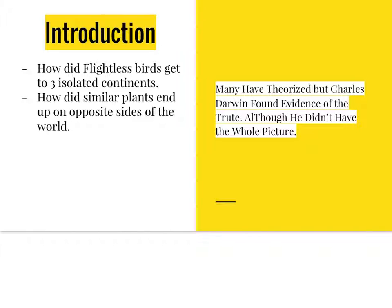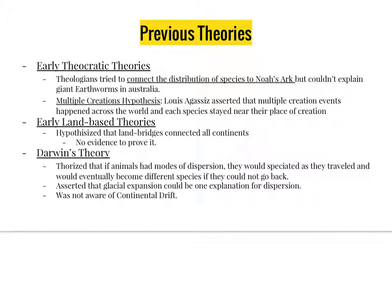Although he wasn't fully correct, because he didn't have the whole picture at the time. There have been many theories and hypotheses trying to explain why species are distributed the way they are. Early theologians tried to connect animals' dispersions to Noah's Ark. However, they were not able to explain how the giant earthworm got to Australia, or how a ship massive enough to hold every species on Earth and provisions such as water and food for them all could be built.